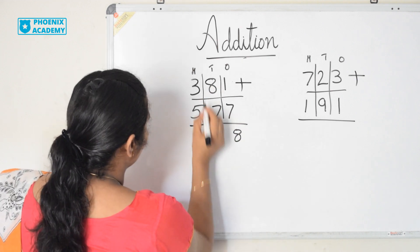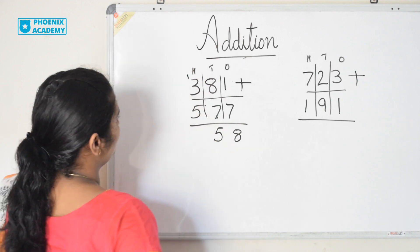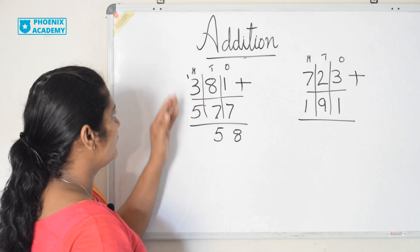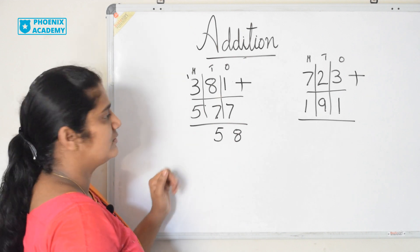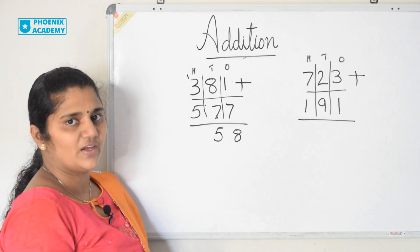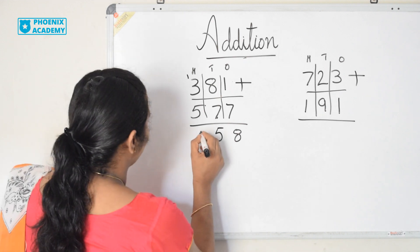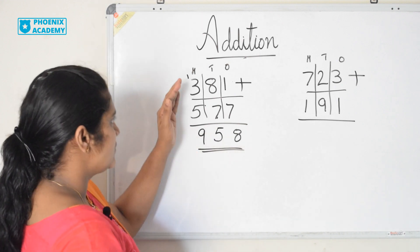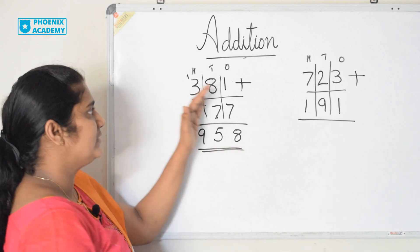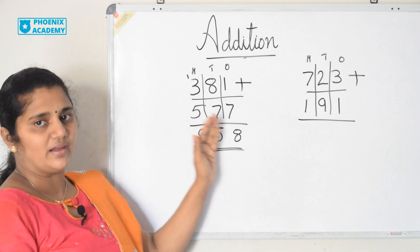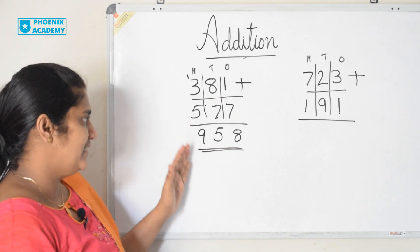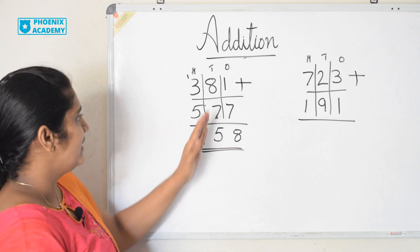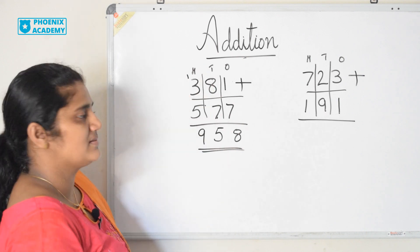1 carry forwarded to the 100's place. Let's add the 100's now. 1 plus 3 is 4. 4 plus 5 is 9. So the sum of 381 plus 577 is 958. Here we are regrouping 10's.